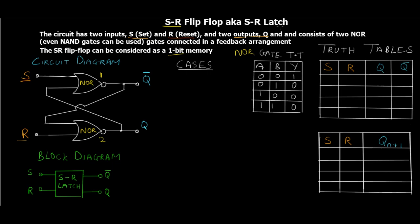Let's take a look at some background info on the NOR gate. In the truth table for a NOR gate, only when both inputs are zero is the output high; for all other combinations of a two-input NOR gate the output is zero. We've already covered NOR and NAND as universal gates in separate video tutorials. This is the truth table for the basic two-input NOR gate that we'll use when we derive the cases.